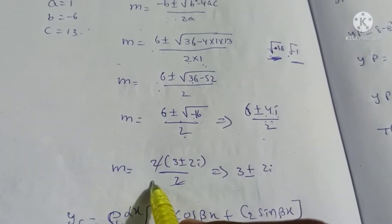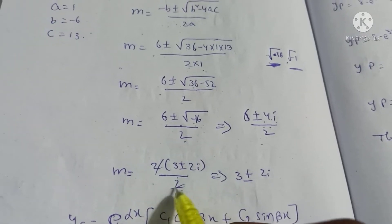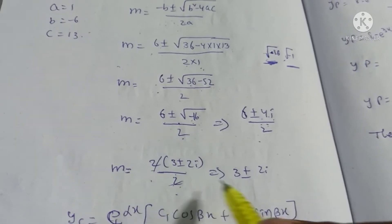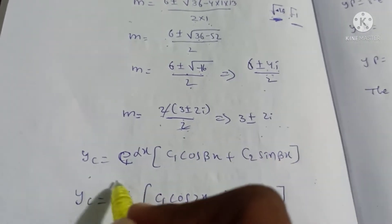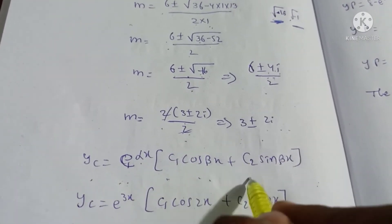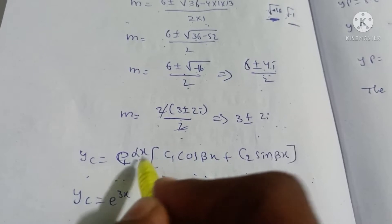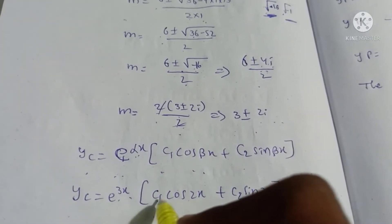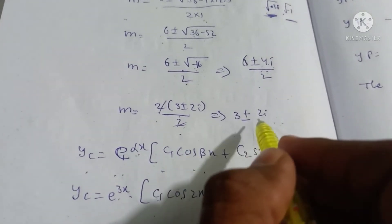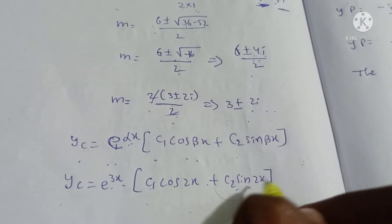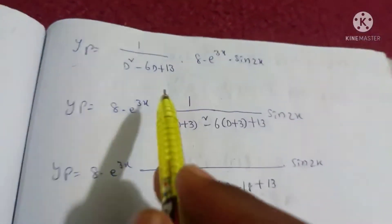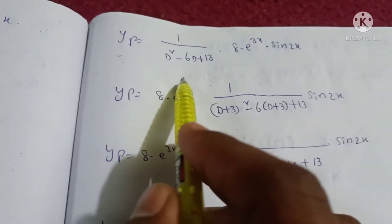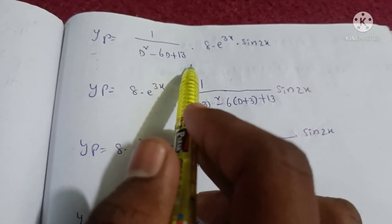Since the roots are complex, using the complementary function formula: yc equals e^(alpha·x) times (c1·cos(beta·x) plus c2·sin(beta·x)), where alpha equals 3 and beta equals 2. So yc equals e^(3x) times (c1·cos(2x) plus c2·sin(2x)).